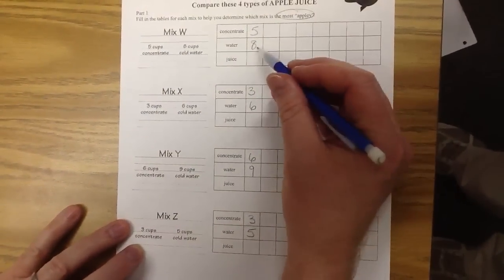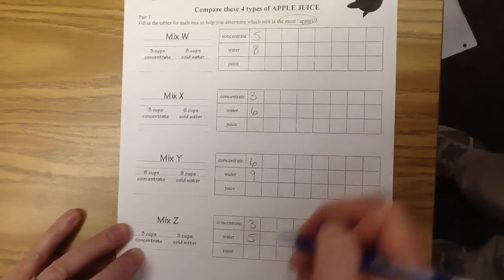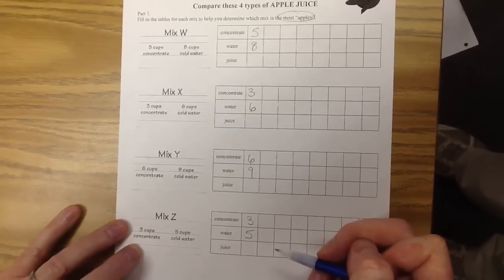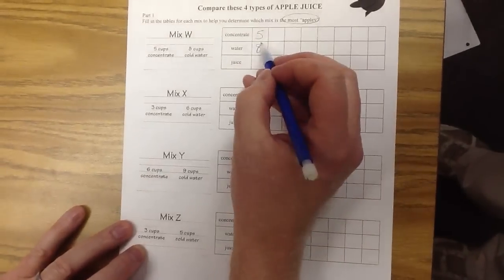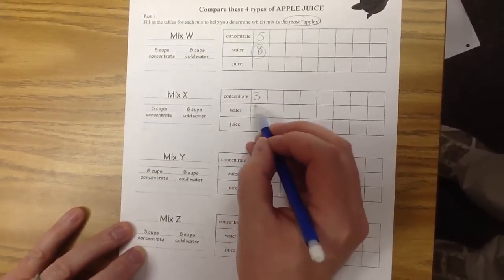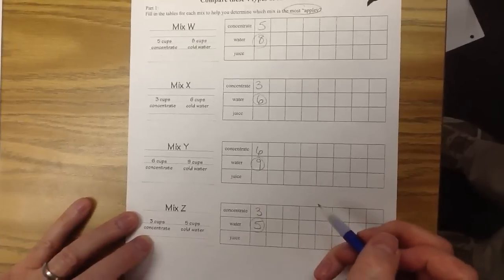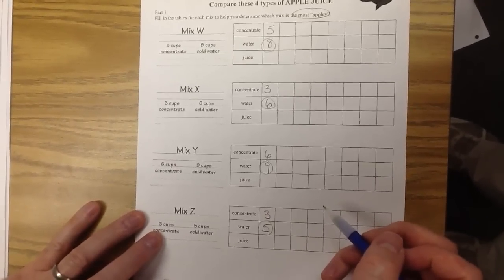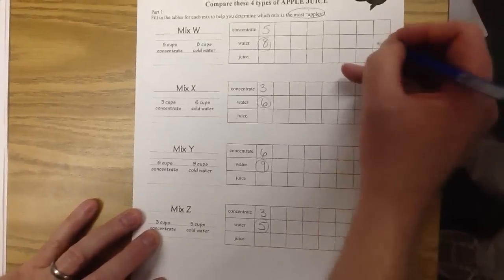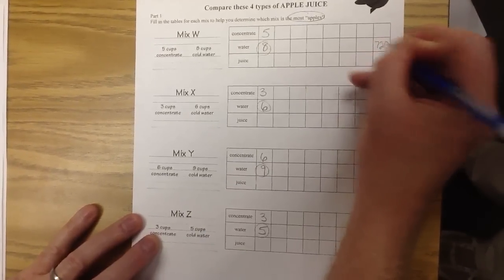So we need to make all of these numbers common in each mix. If I look at the water first, 8, 6, 9, and 5. The least common multiple for all of those numbers ends up being 720.